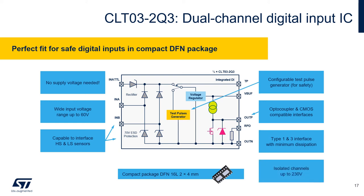The input characteristic is matching type 1 and 3 requirements. The output stage can interface either an optocoupler or 3.3 volt CMOS logic circuit. There is also a configurable test pulse generator for improved system safety. The part comes in a tiny DFN package with an outline of 2 by 4 mm. Both channels are completely independent and isolated from each other, permitting residual voltages up to 230 volts. These features make the IC very flexible and perfectly fitting in safe applications.